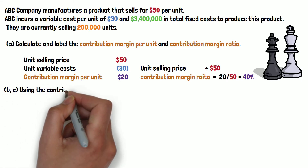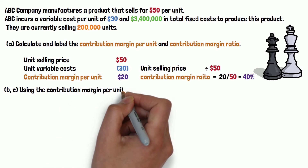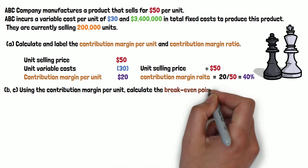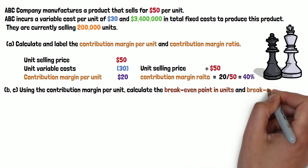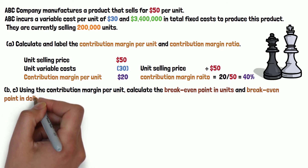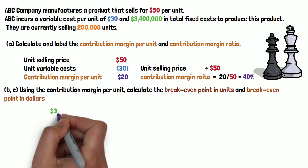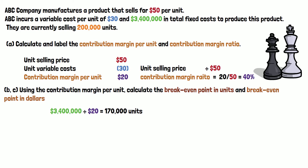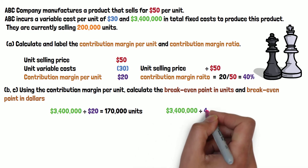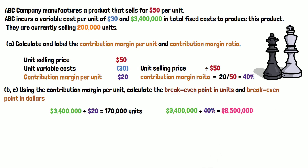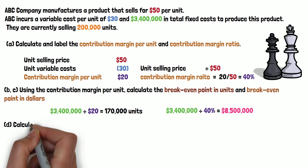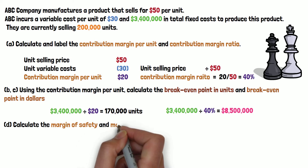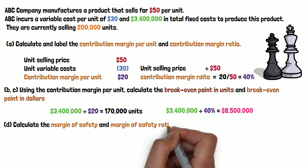The next question is to use the contribution margin per unit and contribution margin ratio to calculate the break-even point in units and in dollar amounts. Fixed cost of $3.4 million divided by the contribution margin per unit of $20 gives a break-even point of 170,000 units. Using $3.4 million divided by the contribution margin ratio of 40 percent gives $8.5 million in break-even dollar sales.